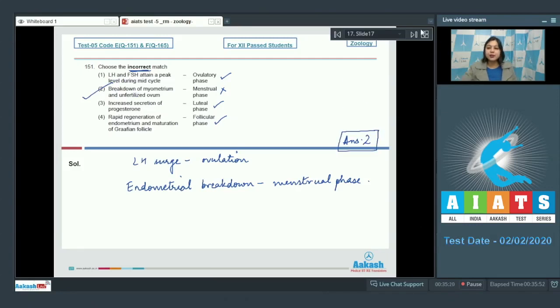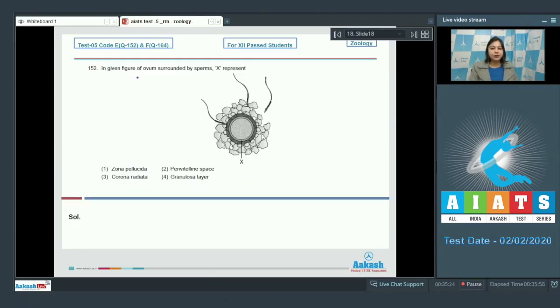Proceeding to the next question students. Question number 152. In the given figure of ovum surrounded by sperms, X represents. So we have to identify X over here.